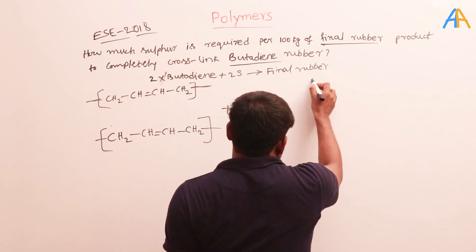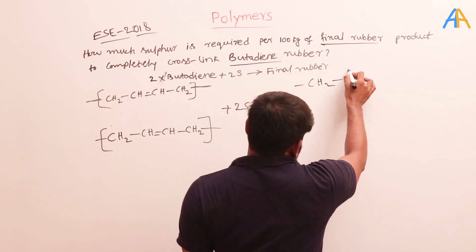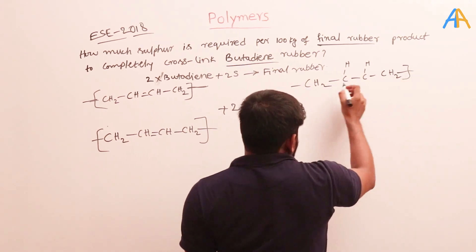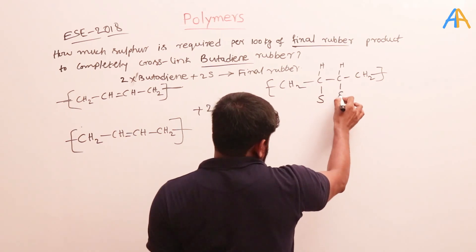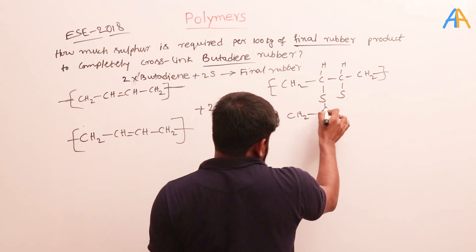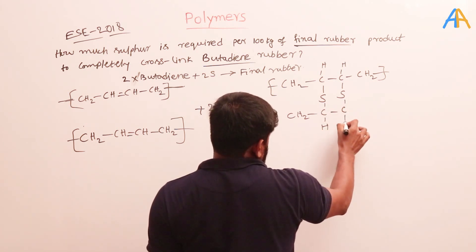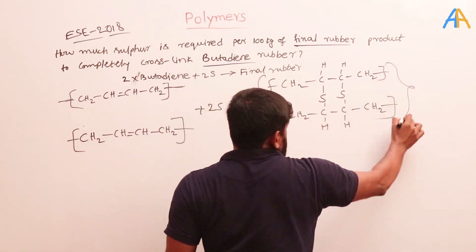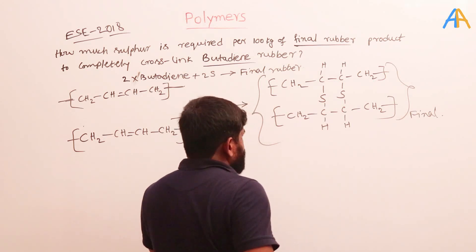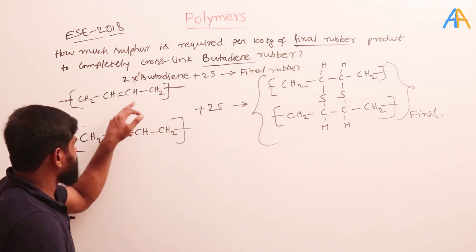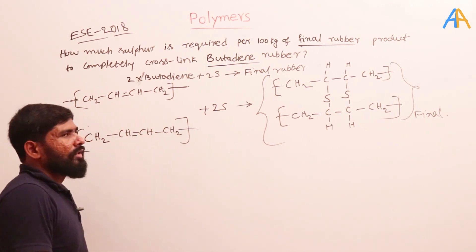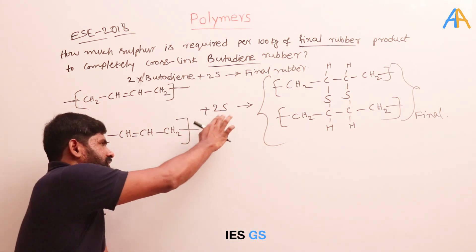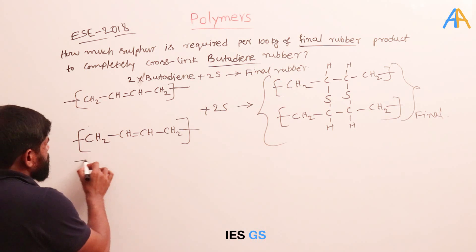So these are two molecules of butadiene, and we add two sulfur atoms. In the final reaction: the double bond in butadiene is broken to form the sulfur bonding — sulfur forms bonds connecting the two butadiene chains. In this process, observe: no carbon or hydrogen is removed or added to the butadiene. Only two sulfur atoms are added.